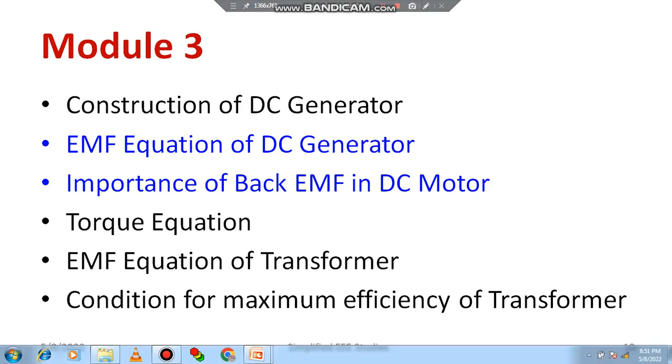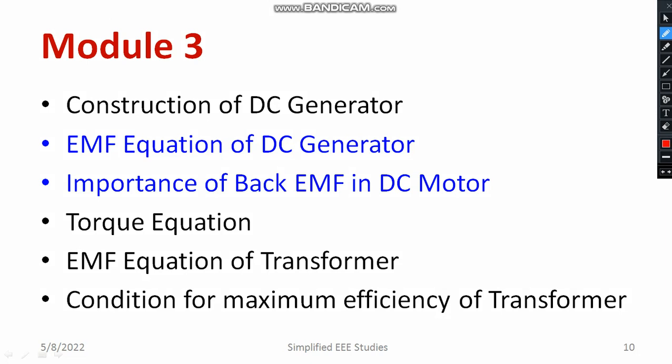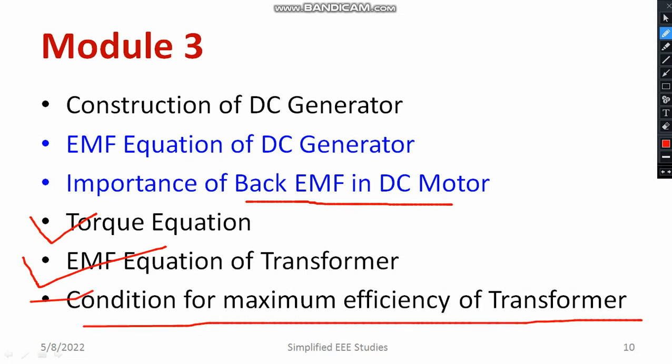Regarding module 3, you need to study the construction of a DC generator. The torque equation of a DC generator is mandatory, as is the importance and significance of back EMF in a DC motor — explain it with the help of a diagram. The EMF equation of the transformer is also important, and you may expect a numerical example. If time permits, study the condition for maximum efficiency of the transformer — at least mention that copper loss equals iron loss.